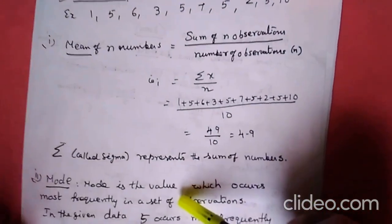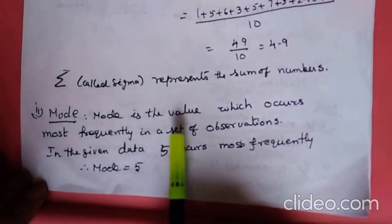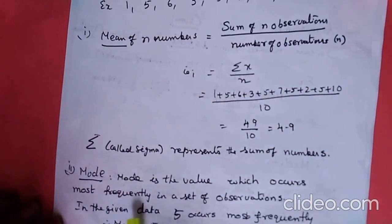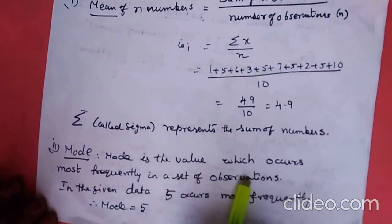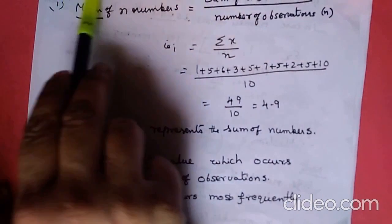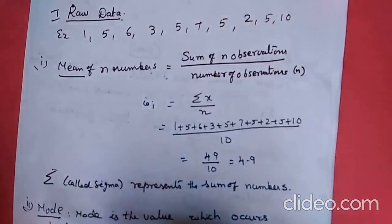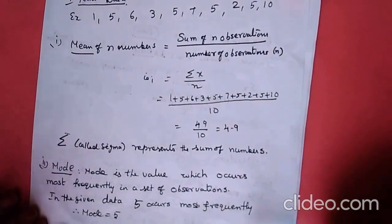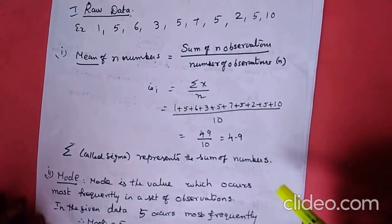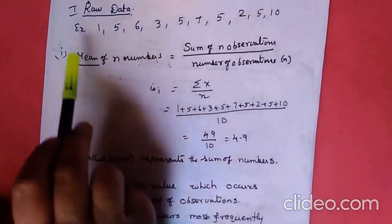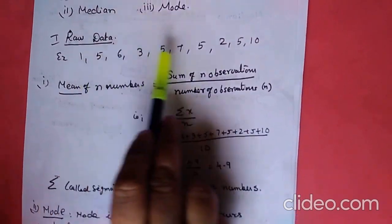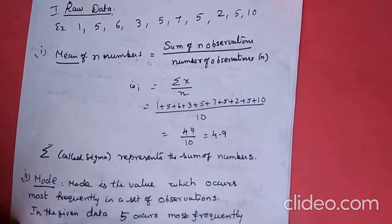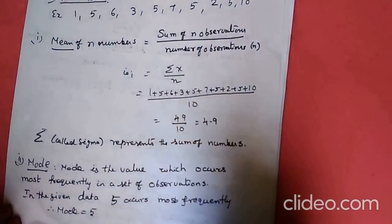Now come to mode. What is mode? Mode is the value which occurs most frequently in a set of observations — the number that comes again and again, many times. That is the mode. Here, which number is repeating? 5 is repeating many times. Therefore, the mode is equal to 5.